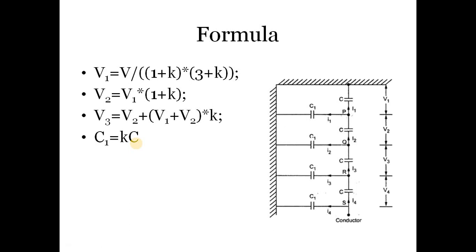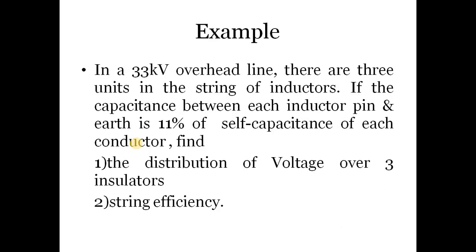So by using these formulas, we can calculate V1, V2, V3, and ultimately we can calculate the string efficiency. I have given one example: in a 33 kV overhead line, there are three units in the string. If the capacitance between each insulator pin and earth is 11% of self-capacitance of each conductor, then find distribution of voltage over three insulators.